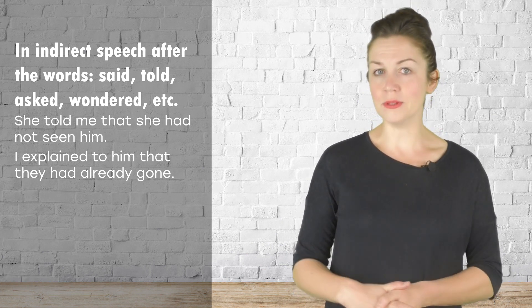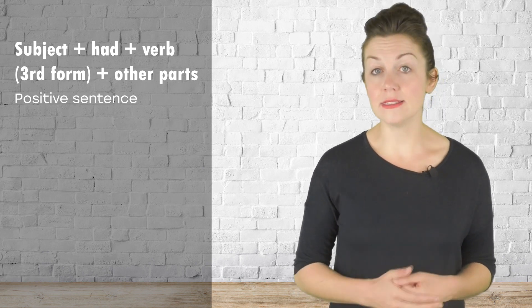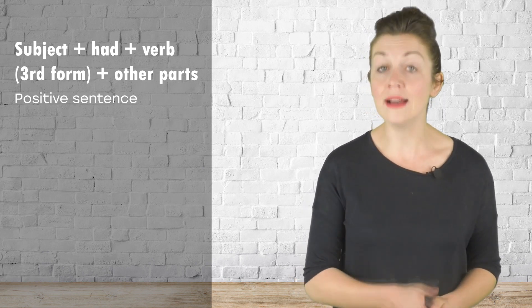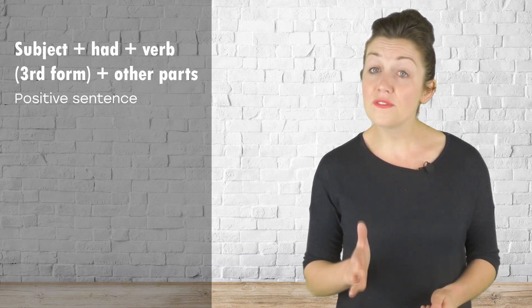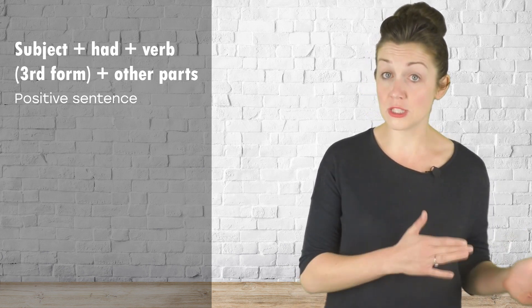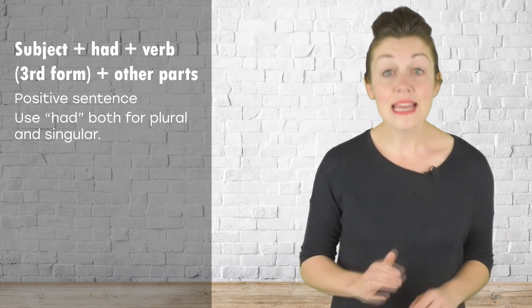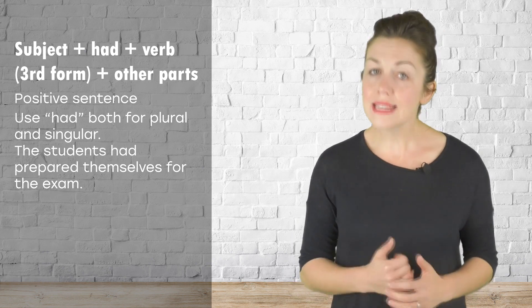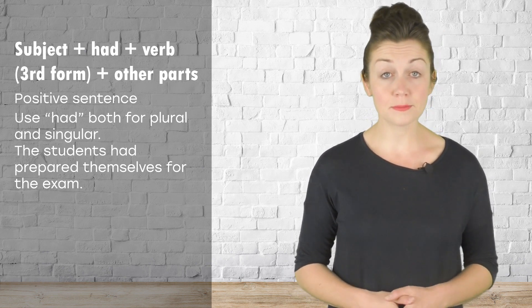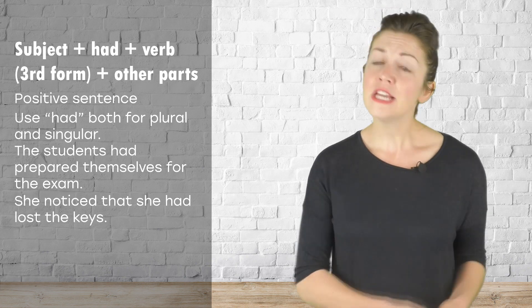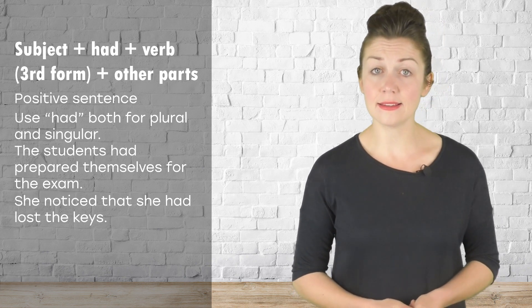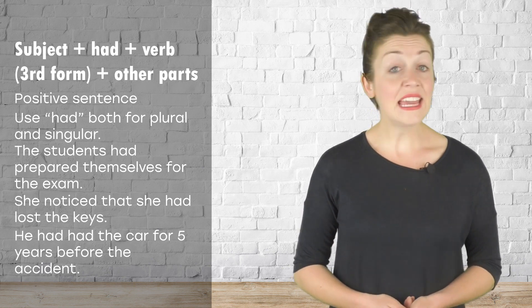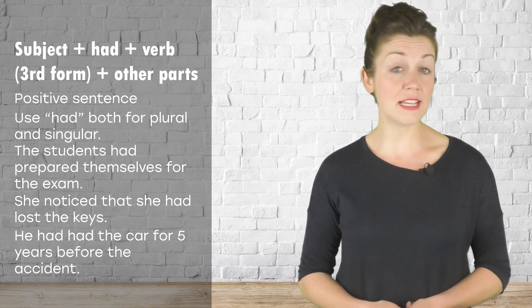Next, let's look at how the past perfect tense is formed. A positive sentence follows the formula: subject + had + verb in the third form (past participle) + other words. Had is used for both plural and singular. For example: the students had prepared themselves for the exam. She noticed that she had lost the keys. He had had the car for five years before the accident.